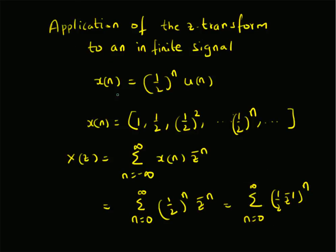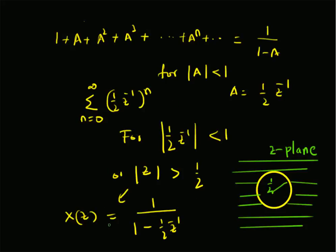To summarize: for a given signal x(n) = (1/2)^n * u(n), an infinite signal where (1/2)^n decreases with n, the Z transform is 1/(1 − (1/2) * z^(−1)). This series converges only for |z| > 1/2. Inside the circle, the Z transform does not exist — it diverges. Thanks for watching.